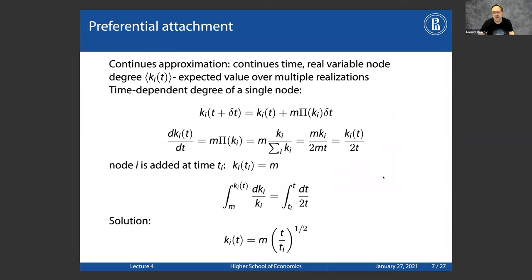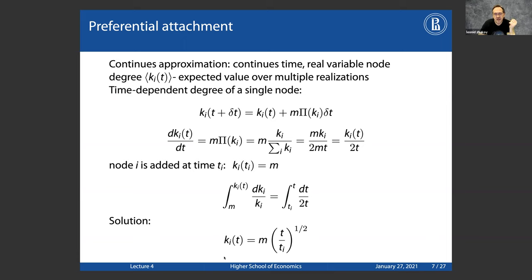Now we'll use the same trick as before: switching to a continuous representation where we think about node degrees as a continuous variable. The reason is that integration is easier than summation and gives pretty much the same results — it's a shortcut replacing discrete variables with continuous ones. You can think of this as the expected value over multiple realizations of the network. The idea is to see how the node degree evolves with time as this process continues.